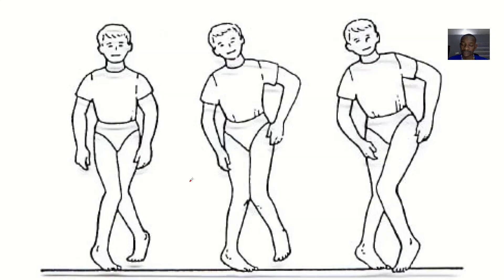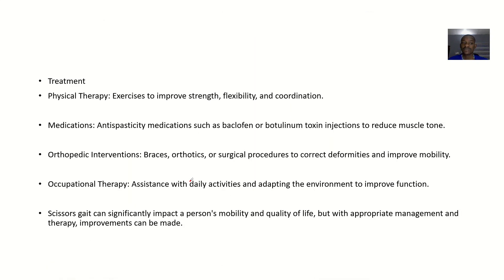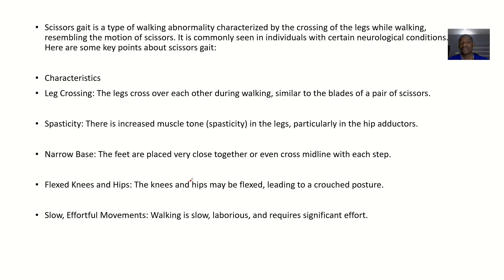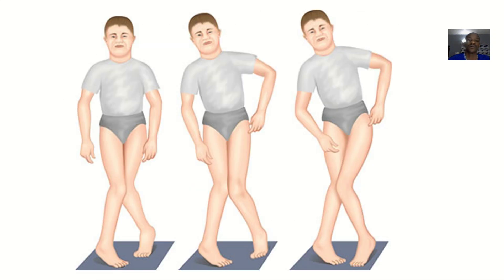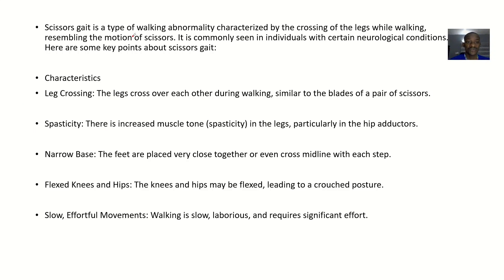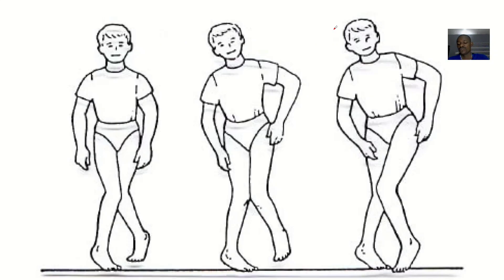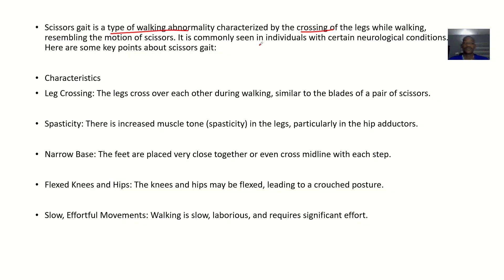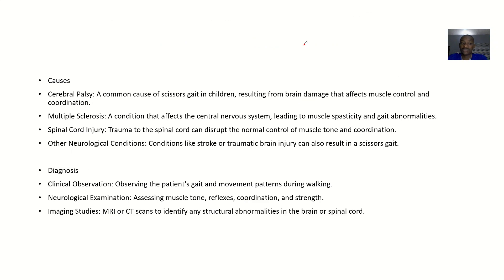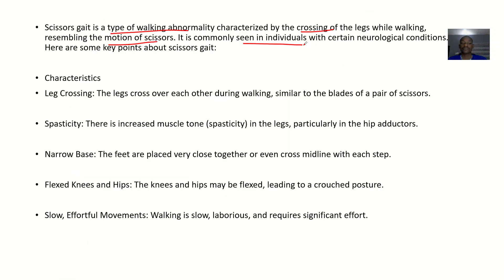Let's talk about it from the definition to the characteristics to the causes to the diagnosis to the possible treatment. The scissors gate is a type of walking abnormality characterized by crossing the legs while walking — which shouldn't be there. If somebody is crossing their legs while walking, you simply know there's a problem. This resembles the motion of scissors and is commonly seen in individuals with certain neurological conditions.